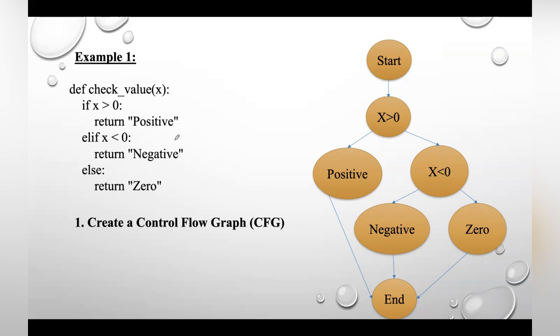Suppose this is the code given for us. Now our first step is to create a control flow graph. Let's first identify the number of blocks in this code. First is here—as we're taking start and end, this start becomes the first block. Next, our condition is if x > 0, which becomes the second block.